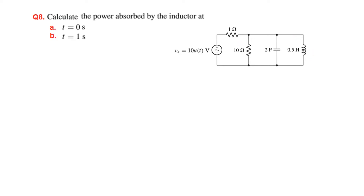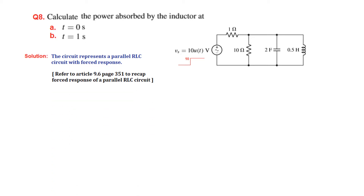If you look carefully, this is a parallel RLC step function circuit. The input '10u(t)' means it is a step function — that is, it is 0 before t equal to 0, and after t equal to 0 its value is 10. So the circuit represents a parallel RLC circuit with forced response. If you have forgotten, you should go back to article number 9.6, page 351, to understand the forced response of a parallel RLC circuit from Mr. Hyatt's book.